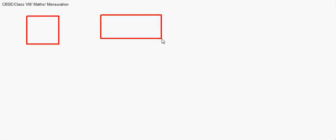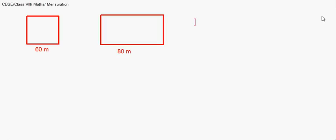A very simple question: a square and a rectangular field are given. The square has each side of 60 meters. The rectangle's length is given as 80 meters, but the width is not provided. It is stated that the square and the rectangle have the same perimeter, and we have to find which has a larger area.